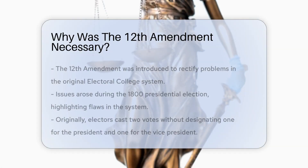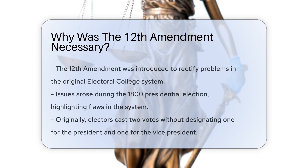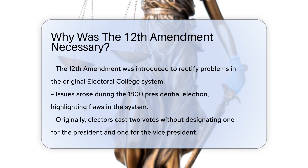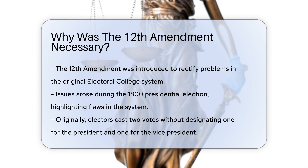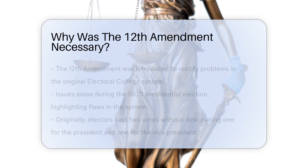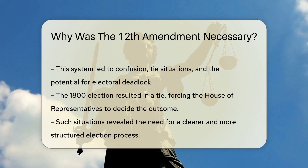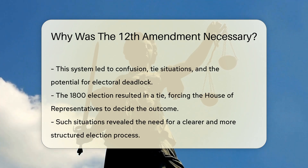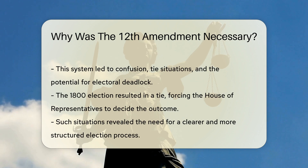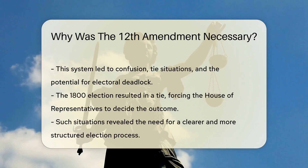The 12th Amendment was necessary to address issues with the original electoral college system, which led to problems during the 1800 presidential election. Before the 12th Amendment, electors cast two votes without specifying a presidential or vice presidential choice, causing confusion and tie situations. This resulted in the House of Representatives having to decide the president, as seen in the 1800 election.